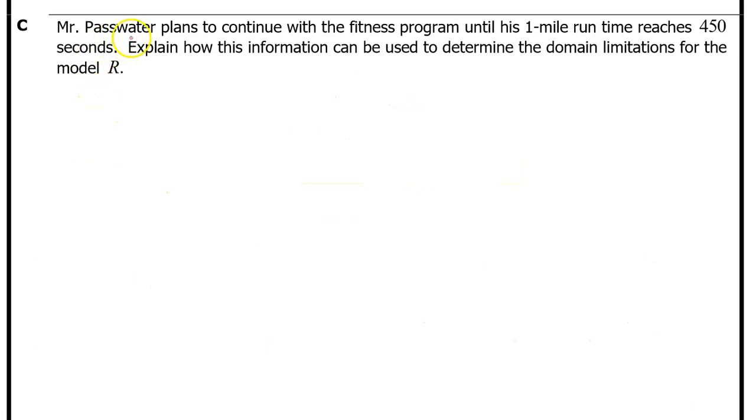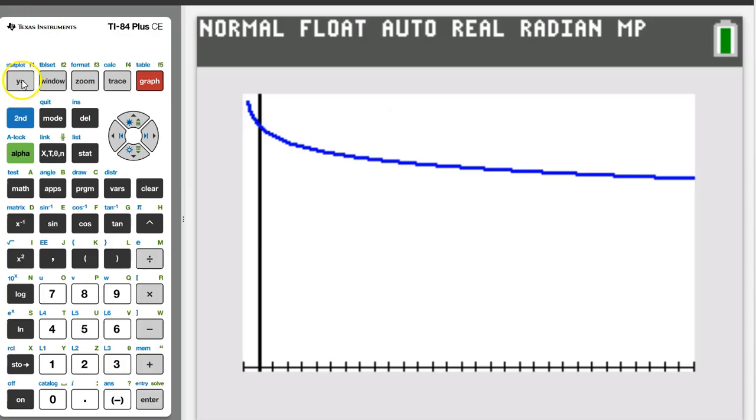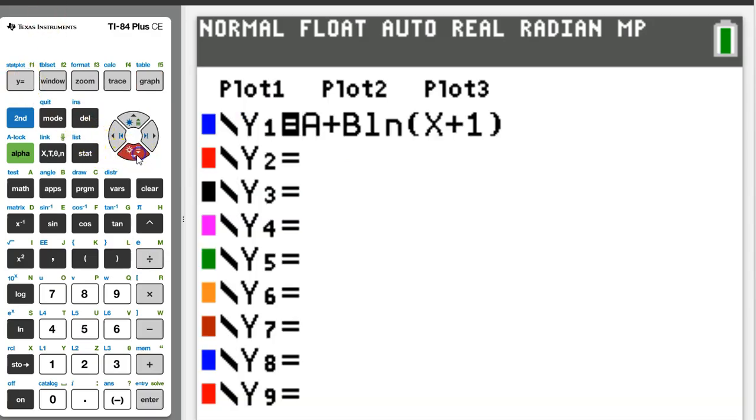Part C. Mr. Passwater plans to continue with the fitness program until his 1 mile run time reaches 450 seconds. Explain how this information can be used to determine the domain limitations for model R. We can use the graphing calculator to find where R(t) is equal to 450. It's good that we typed R(t) in as y1. So, all we need to do is let y2 equal 450 and find the intersection point.